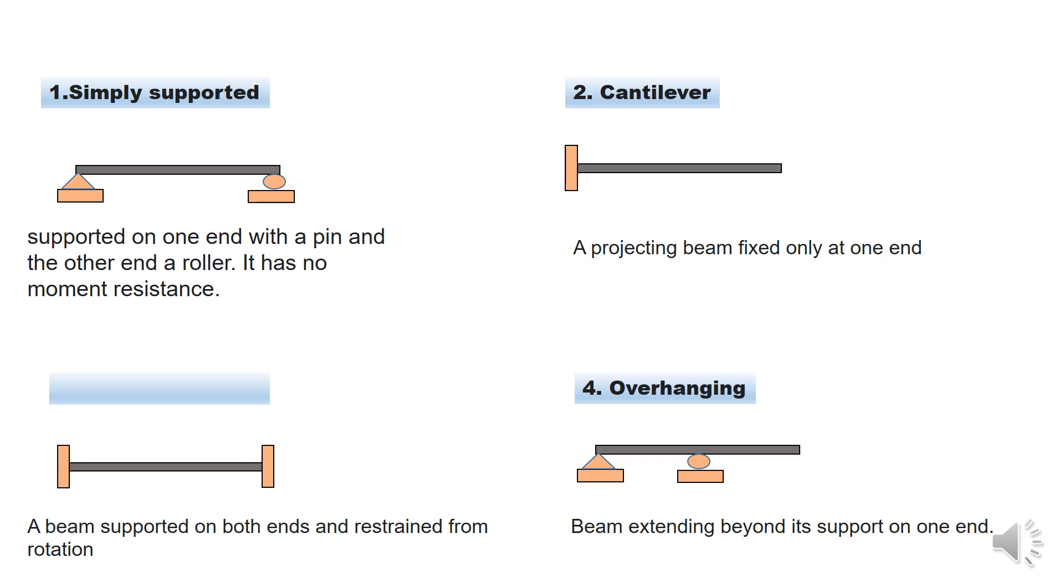The fourth one is overhanging beam. When you have a beam extending beyond the support, from this diagram we have pin support and roller support. However, this beam extends beyond the support, and when this happens we call it overhanging beam.